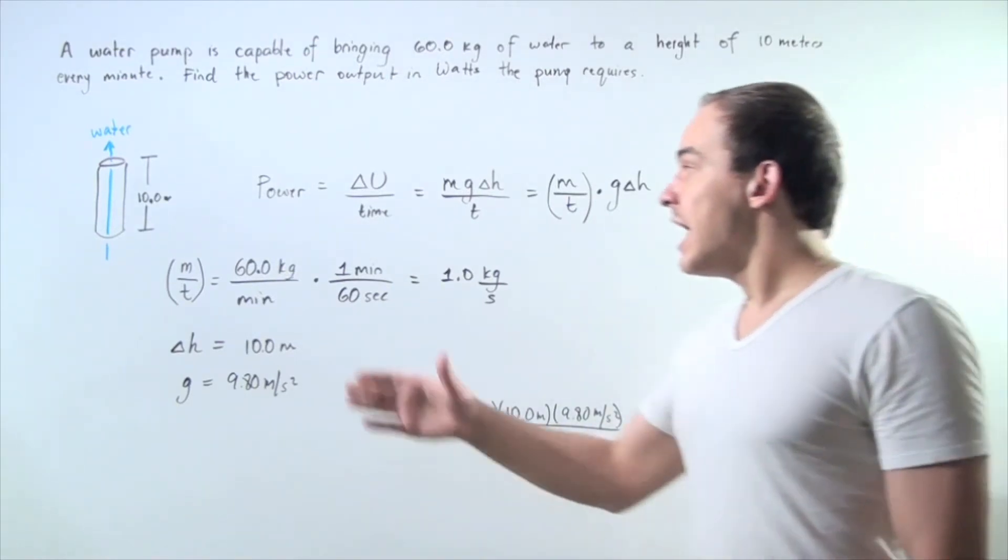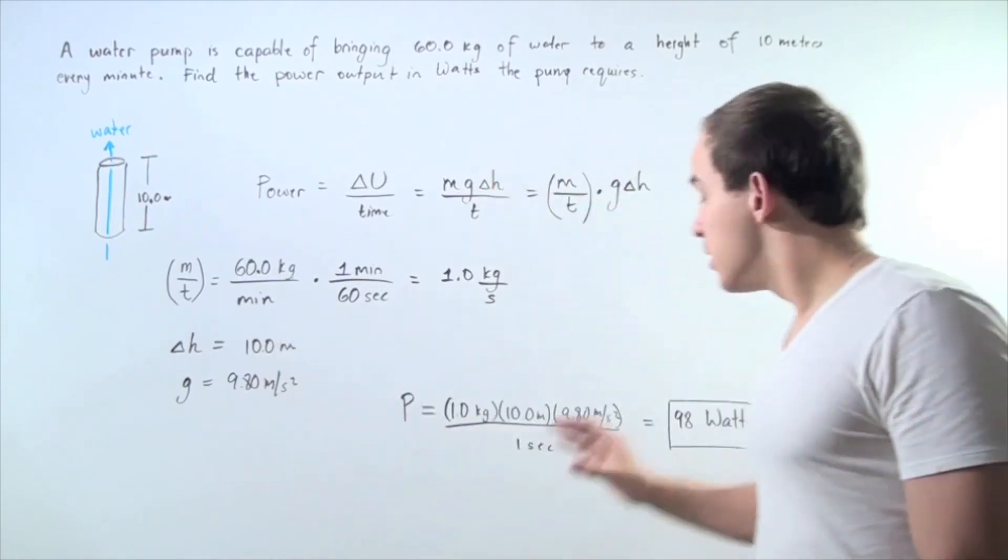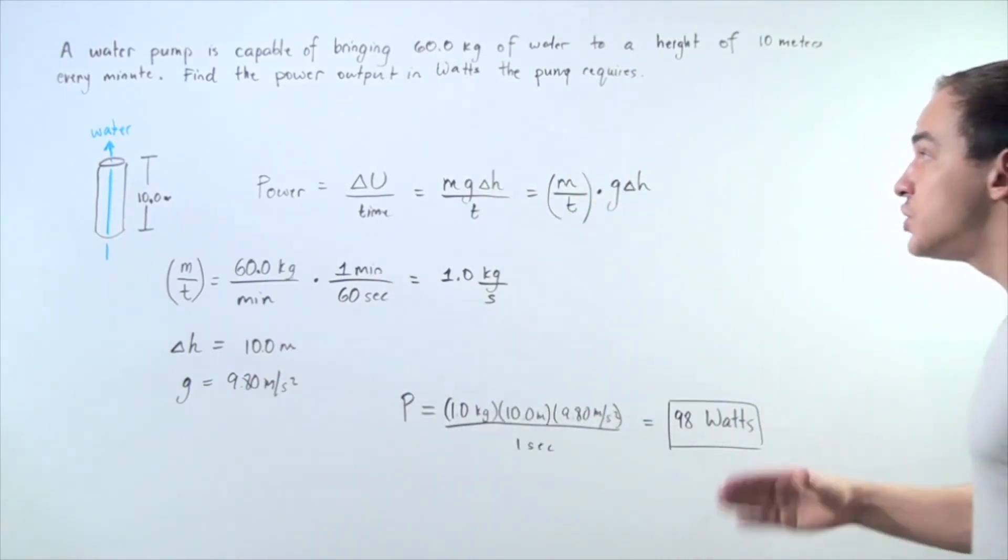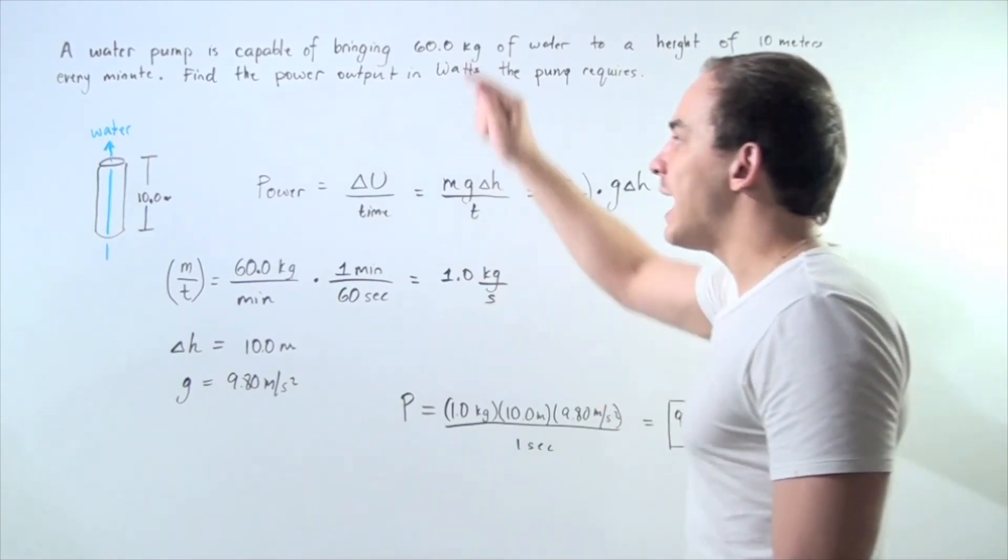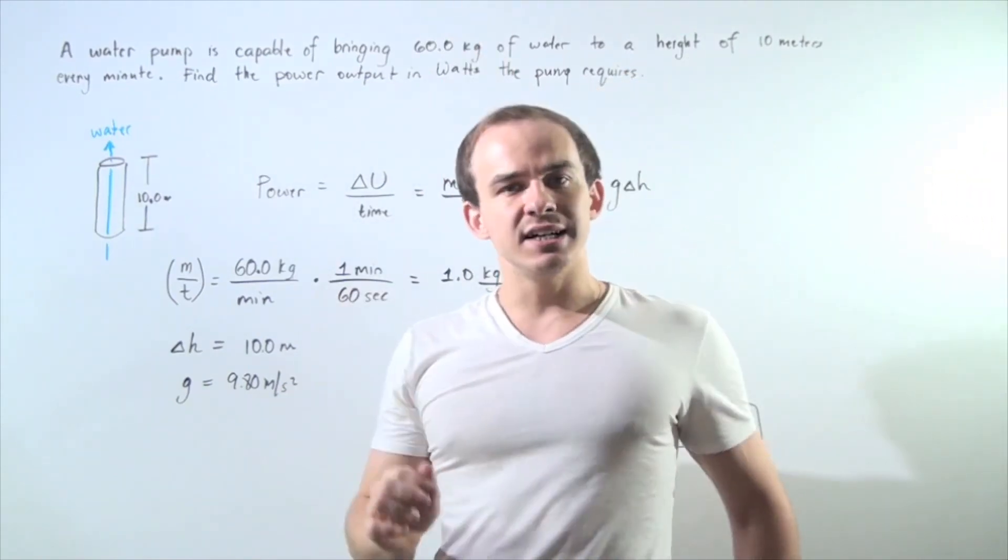In other words, our pump should have this much power to be able to move 60 kilograms of water up a height of 10 meters every single minute.